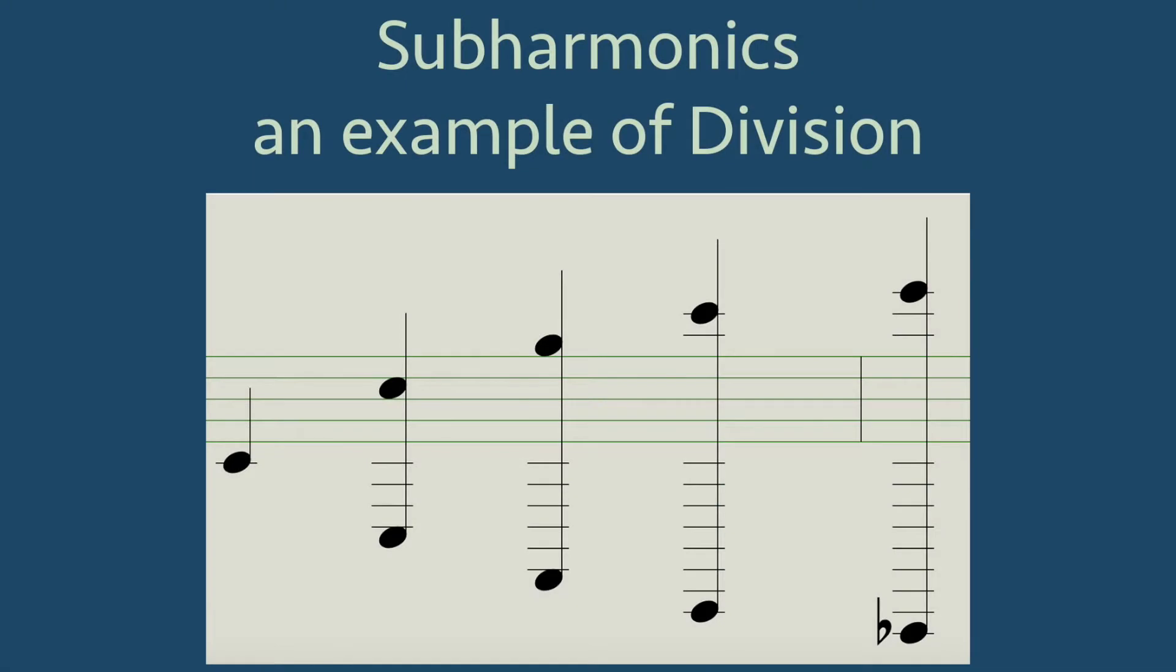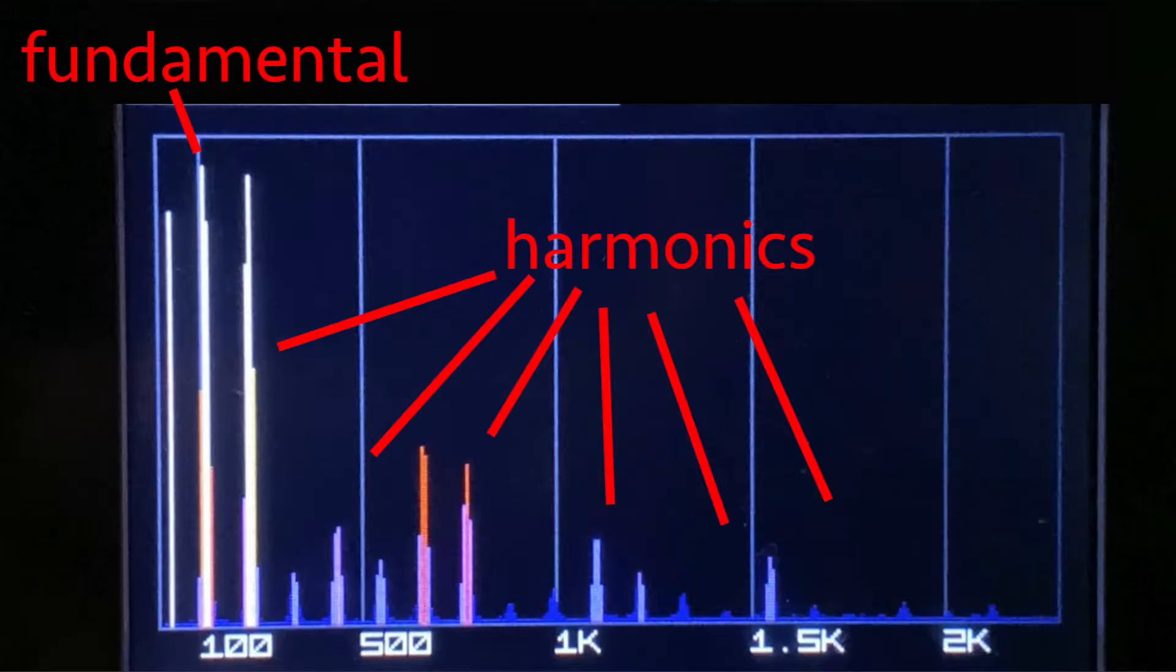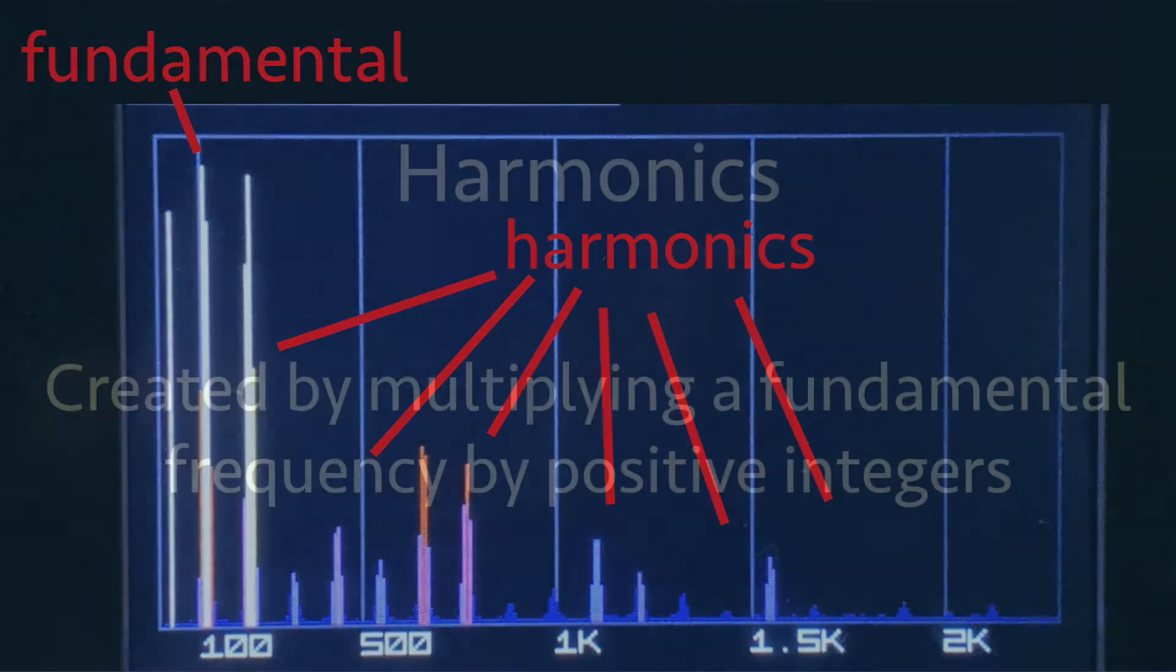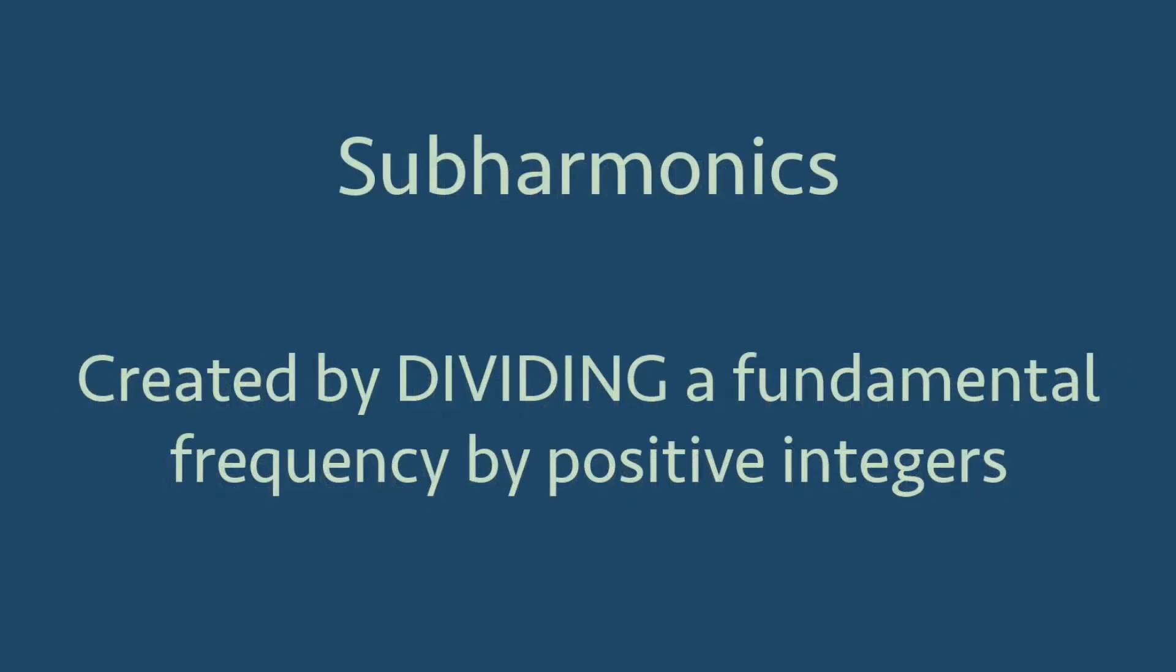Subharmonics to a fundamental tone have a relation that is similar to what happens in the harmonic series. As seen in another video, positive integer multiples of a fundamental frequency lead to the harmonic series. Different instruments have different characters or timbres due to different amplitude levels of these harmonics. Harmonics can be created by multiplying a fundamental frequency by positive integers, but subharmonics can be created by dividing a fundamental frequency by positive integers.